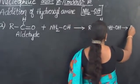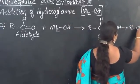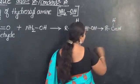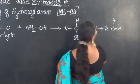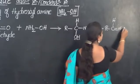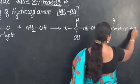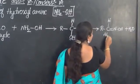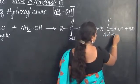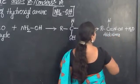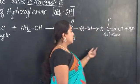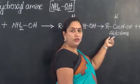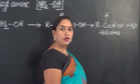Let us see how the product will look. R is linked with C; above is hydrogen, and C is linked with nitrogen by a double bond. With nitrogen there is OH, and water is released. These products are generally referred to by the name aldoximes. If obtained from an aldehyde, we call them aldoximes.